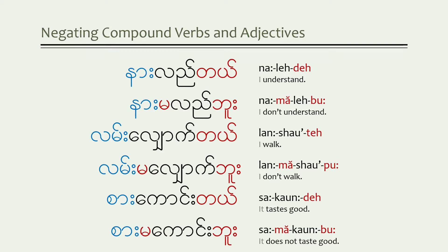You also need to know that this method does not apply to all compound words, verbs, or adjectives. For instance, the word for 'to believe' or 'to have faith in something' is yon-ji — it has two parts. But the way to say 'to not believe or have faith' is ma-yon-ji-bu, so the first negative particle is placed before both syllables. It really just comes down to learning how to negate compound verbs and adjectives on an individual basis.